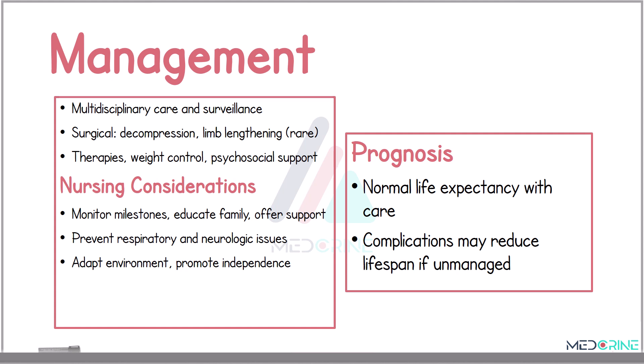Prognostically, with appropriate medical care, individuals with achondroplasia generally have a normal life expectancy. Early detection and intervention improves quality of life and functional outcomes.